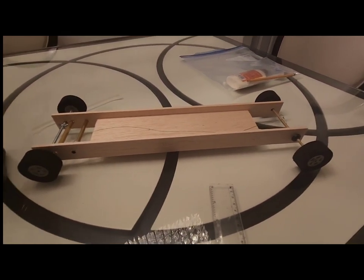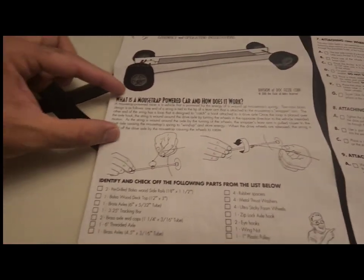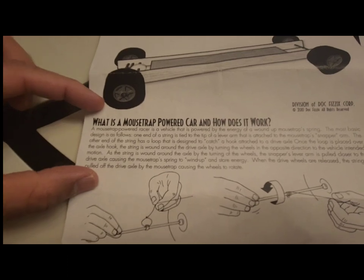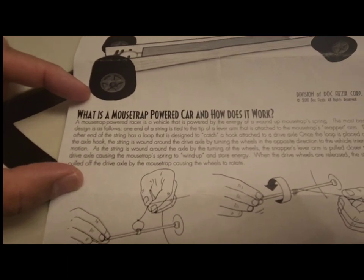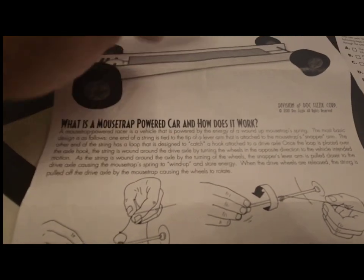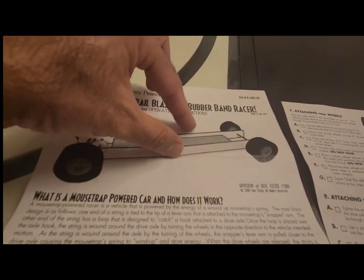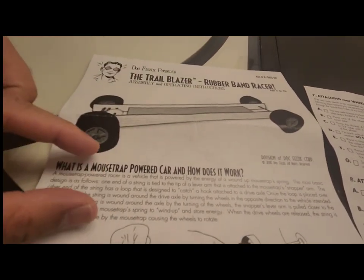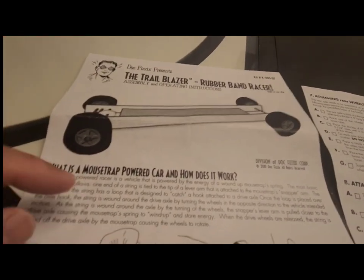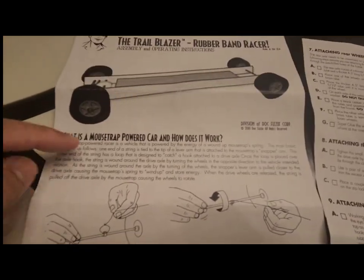On the instructions they also give a little briefing about a mousetrap powered car and how it works, so it's similar to the Trailblazer rubber band racer. The rubber band racer that we are building right now - a mousetrap powered car is similar to that. Here instead of the rubber band we use the mousetrap spring. You can look at the description here in your instructions.